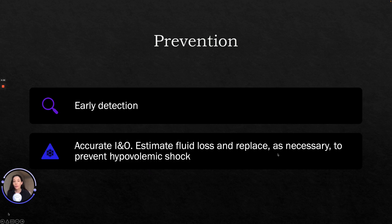To prevent hypovolemic shock, one of the most important things nursing can do is early detection and recognizing patients with conditions that may reduce blood volume and those at risk. We can also maintain accurate intake and output so we can estimate the fluid loss and replacement as necessary.